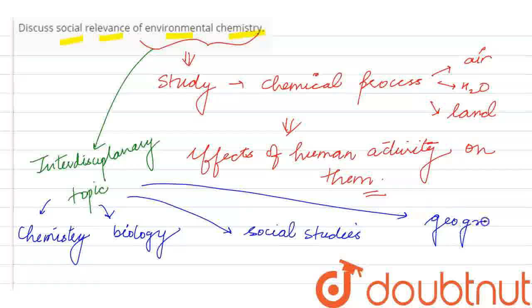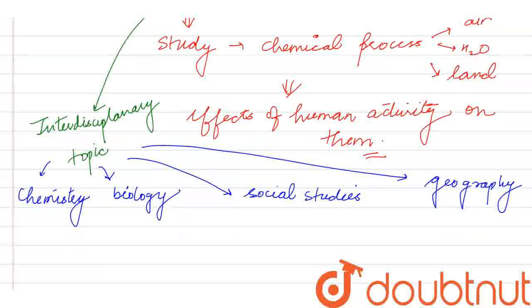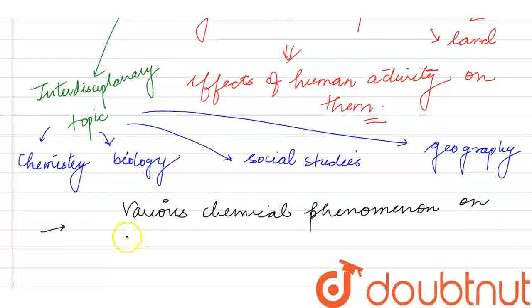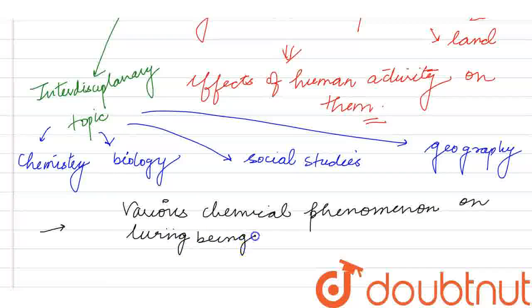If we do not use our resources properly, we can explain various chemicals - various chemical phenomena and processes on living beings and human resources.